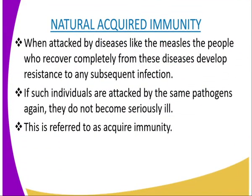Natural acquired immunity is acquired naturally. There are certain diseases which include measles, smallpox, chickenpox, and poliomyelitis. When attacked by such diseases, people who recover completely develop resistance to any subsequent infection by the same pathogens. If such individuals are attacked by the same pathogens again, they do not become seriously ill. This is because memory cells are able to recognize the antigens and stimulate the immune system to produce antibodies against the pathogens. This is known as natural active acquired immunity, which develops when one recovers from an infection. This form of immunity is long-lasting and at times lasts for a lifetime, for example in the case of measles.